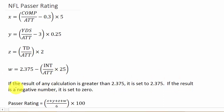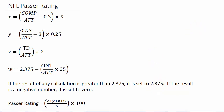One important thing to notice: if the result of any of these calculations is greater than 2.375, you set it equal to 2.375 - it can't be over that. And if the result is a negative number, you just set it to zero.